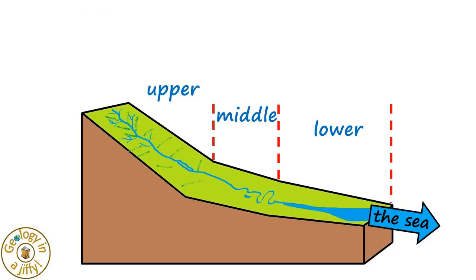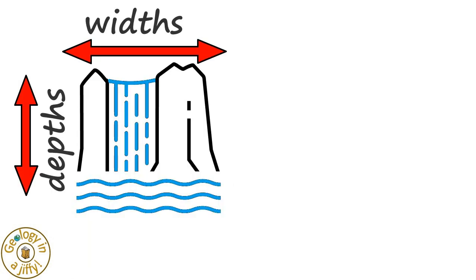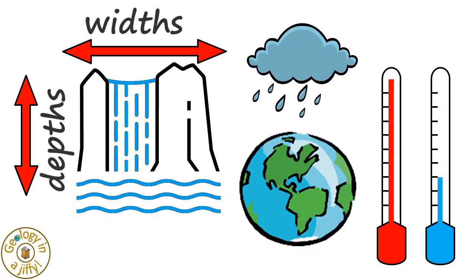We know that rivers have three main sections, namely upper, middle and lower. Waterfalls are commonly formed in the upper course of a river, where a stream or river cuts down through the rocks. Such waterfalls often only flow after a period of rain or as ice melts. Waterfalls found further downstream are often perennial, flowing all year long due to the greater volume of water flowing in this section of the river. Waterfalls can have a wide range of widths and depths, this depending upon their location, the underlying geology and the climate they exist in.